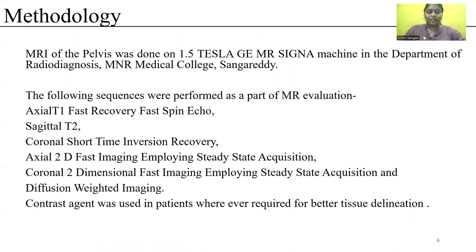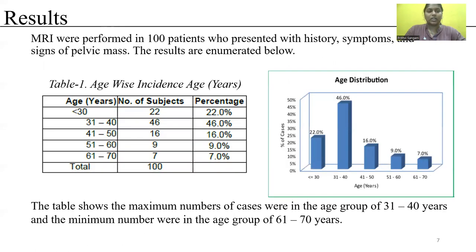MRI sequences performed included: Axial T1 fast recovery fast spin echo; Sagittal T2; Coronal STIR; Axial 2D fast imaging employing steady-state acquisition (FIESTA); Coronal 2D fast imaging employing steady-state acquisition; and diffusion-weighted imaging. Contrast agent was used whenever required for better tissue delineation.